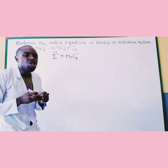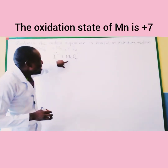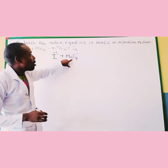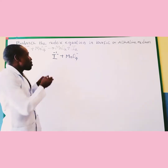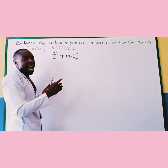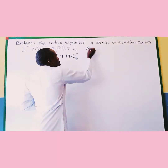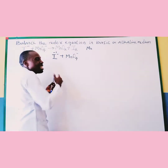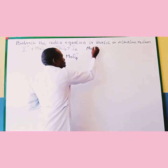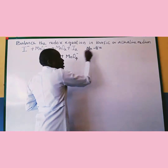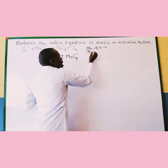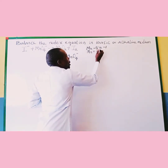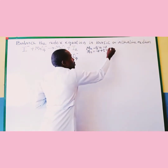The initial oxidation state of manganese in this ion, MnO4⁻, is plus 7. If you want to know how: MnO4⁻ — the oxidation state of oxygen is minus 2, so minus 2 times 4 is minus 8. That equals the charge of minus 1. So therefore Mn equals plus 8, and minus 1 plus 8 gives us plus 7.